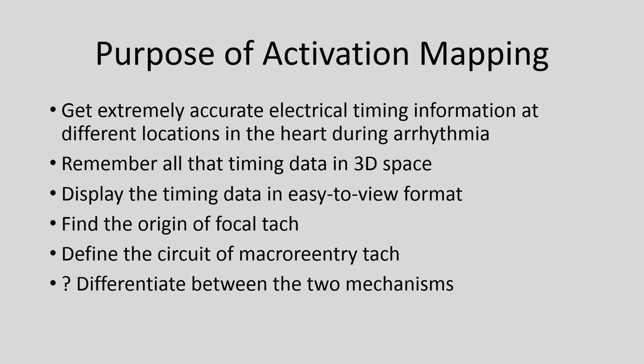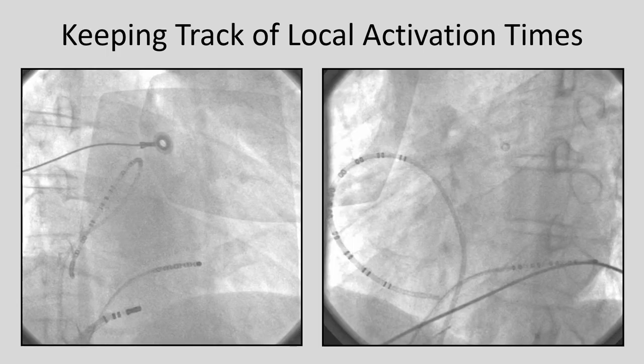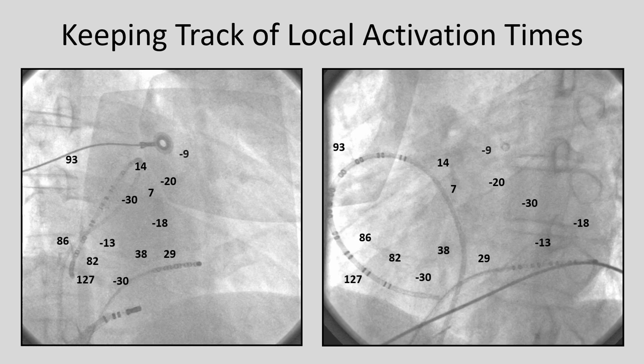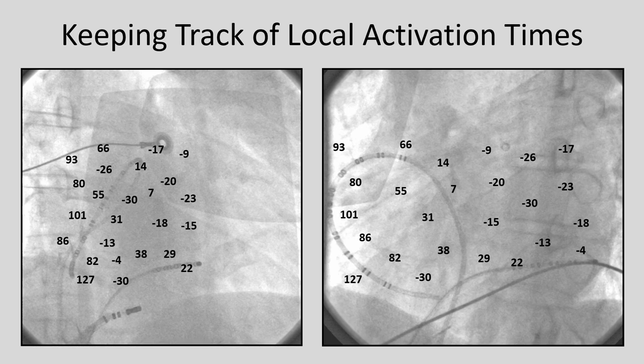You should be able to find the spot of origin of a focal tachycardia for ablation, or define the circuit if you have a macro reentry tachycardia in the atrium or ventricle. Sometimes you can use the activation map to differentiate between the two, though that depends on the size of the reentry circuit. If it's a large circuit revolving around an entire chamber, it's relatively easy to identify with activation mapping. You don't need a 3D map to look at local activation times — you could use fluoroscopy — but you'd have to remember in three-dimensional space the timing at each location, which is difficult.